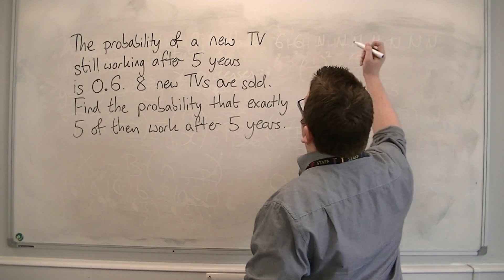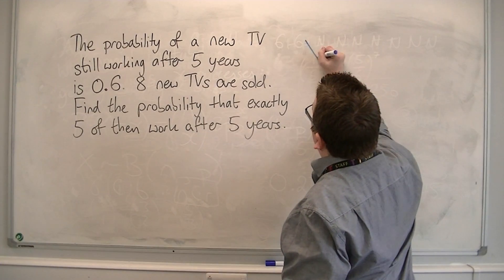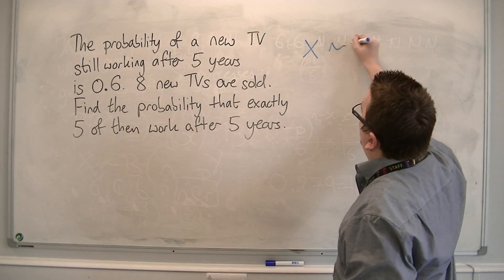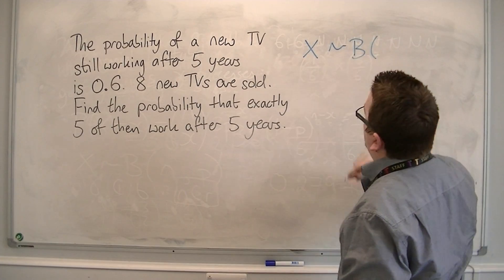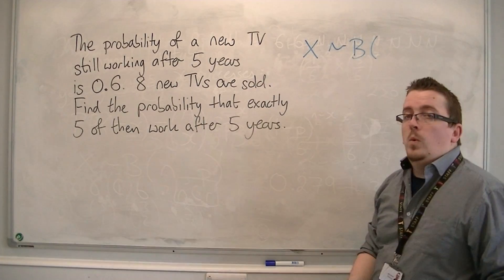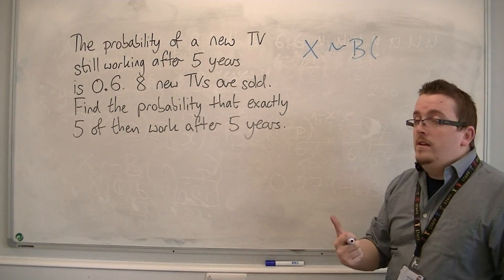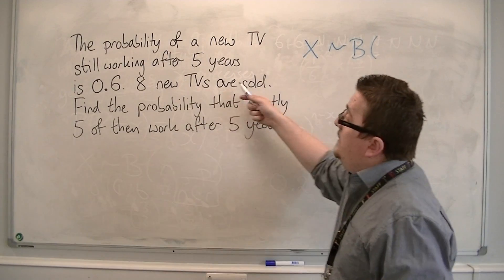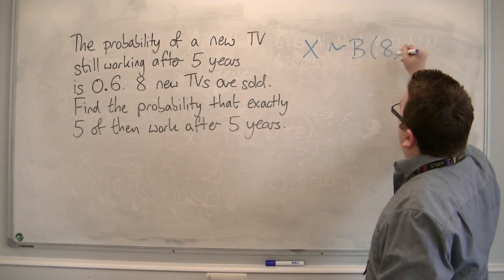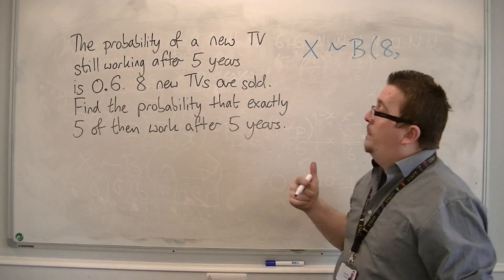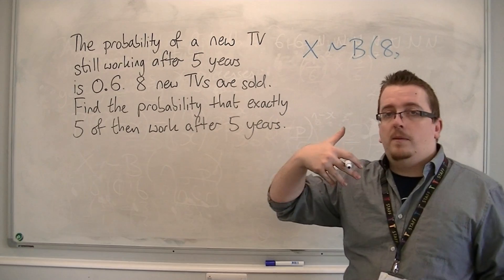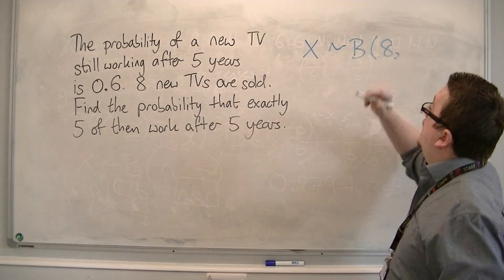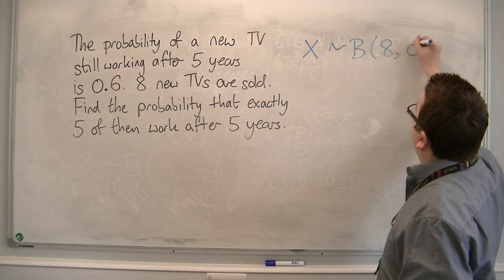So we can say that our distribution X is binomially distributed with N, the number of trials, so that would be eight, and a probability of the TV still working — the success — as 0.6.